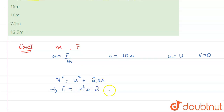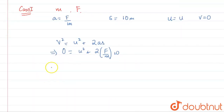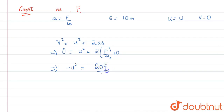So zero equals u² plus 2 into (f/m) into 10. From here, minus u² equals 20f/m. So u² = 20f/m. We hold onto this result for Case 2.